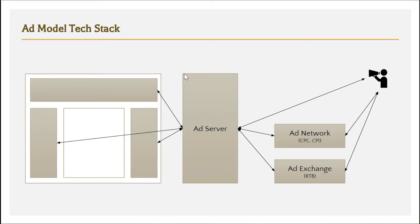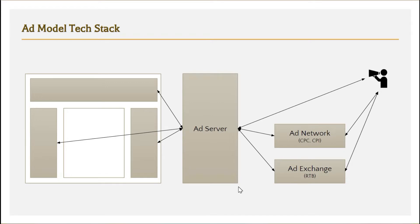We have three ad slots, which are called ad inventories. We register these ad inventories into an ad server and map these ad inventories to ads coming from different sources. The ad server does all this mapping. It also maintains analytics details — how many people a particular ad has been shown to, and how many people have actually clicked on that particular ad. All those analytics are saved by the ad server.